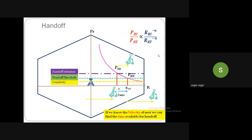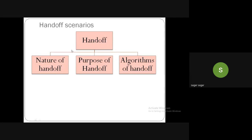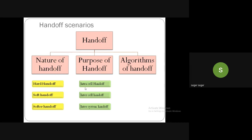Handoff is classified in three ways: by nature of handoff (hard, soft, softer), by purpose of handoff (intra-cell, inter-cell, inter-system), and by the algorithm used (mobile controlled, network controlled, mobile assisted).